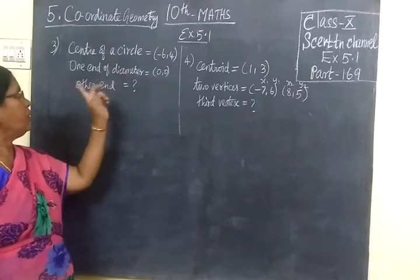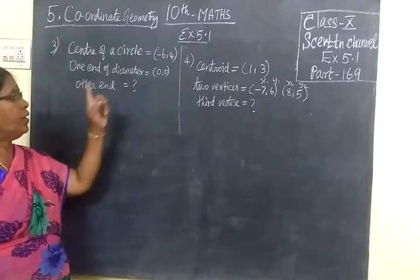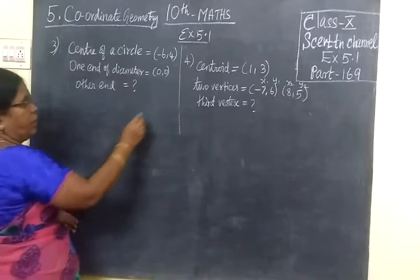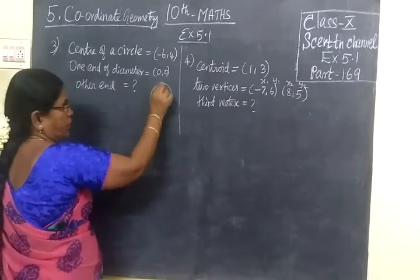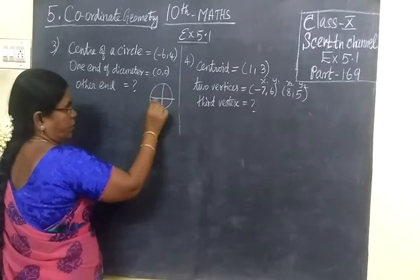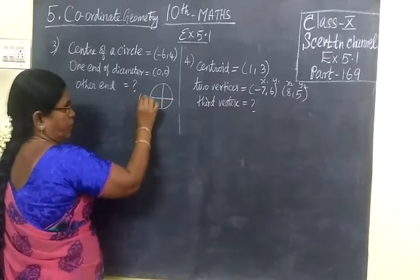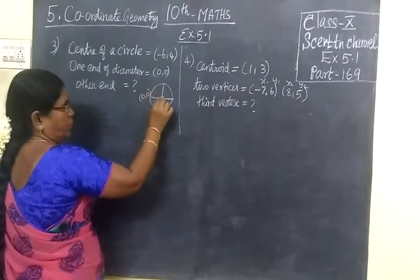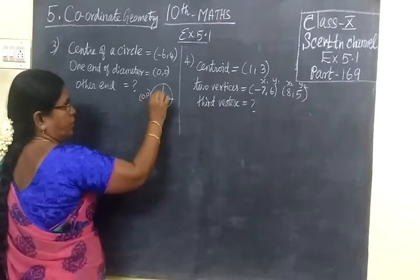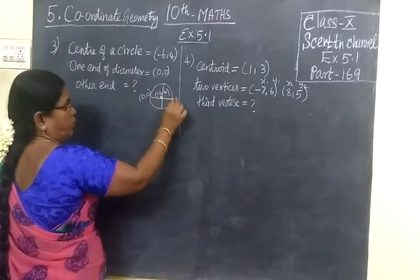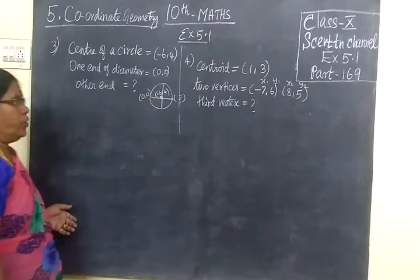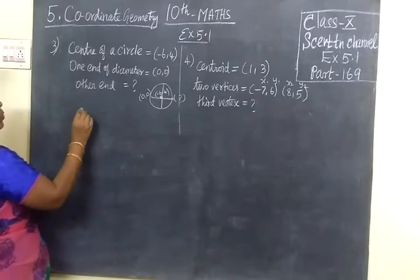Center of the circle given, one end of the diameter (0,0). Find the other end. Here the diameter, one end is (0,0). Center is (-6,4). Other end you have to find. For that you are using the midpoint formula.